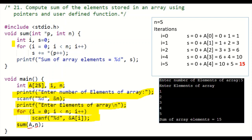Moving on to the function definition, the pointer is received as star p — p is the pointer variable, so the value of a will be stored to p. The second parameter is n, the number of elements of the array. In this sub-program we have declared two variables i and s, where s is for getting the sum.